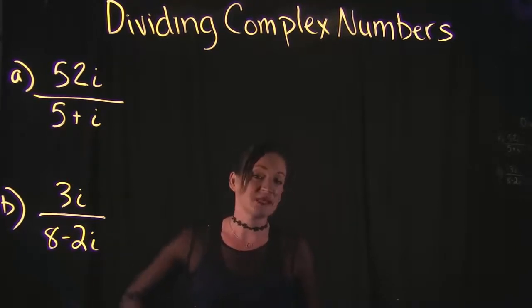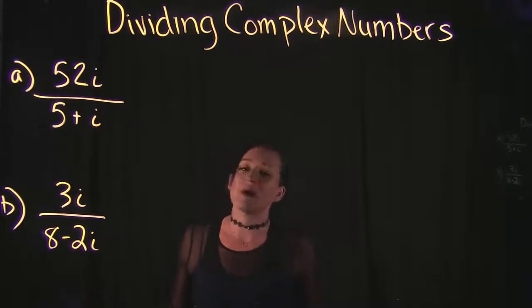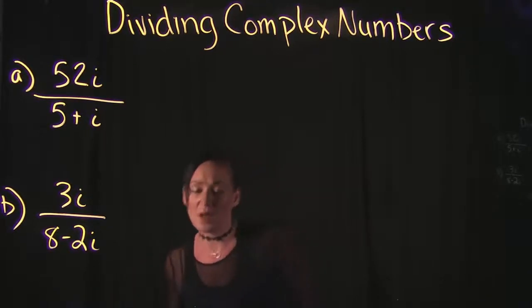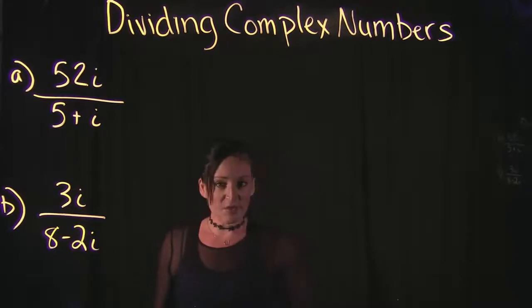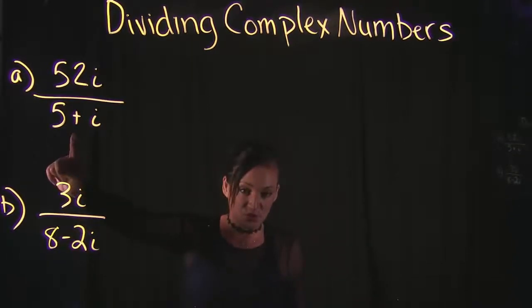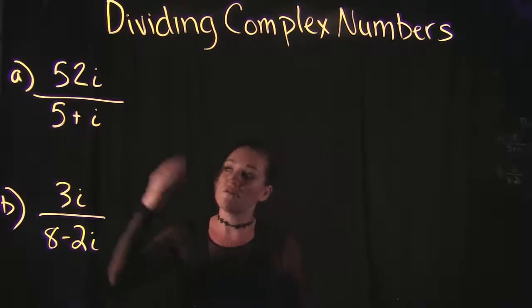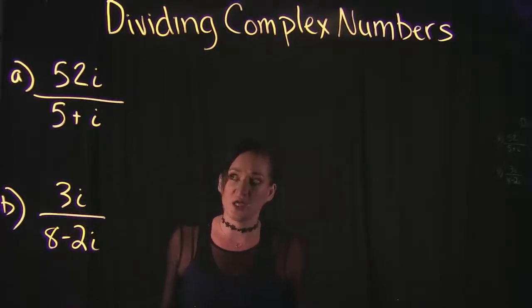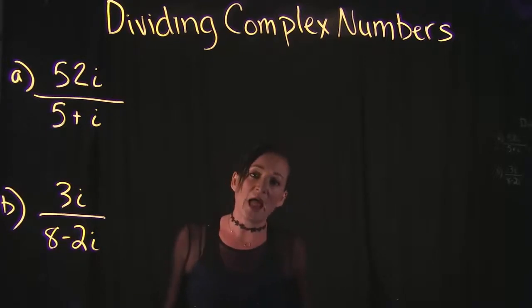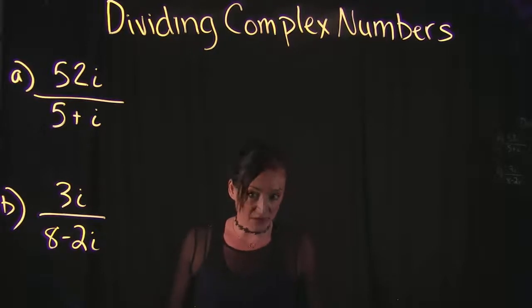You just change the sign between the two terms. Instead of 5 plus i, it's going to be 5 minus i. If it had been 3 minus 2i, you'd do 3 plus 2i. Keep the terms the same, just change the sign: if it's positive make it negative, if it was negative make it positive. That's really all the conjugate is.